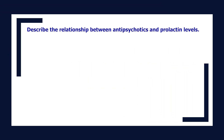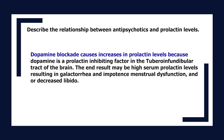Describe the relationship between antipsychotics and prolactin levels. Dopamine blockade causes increases in prolactin levels because dopamine is a prolactin-inhibiting factor in the tuberoinfundibular tract of the brain. The end result may be high serum prolactin levels, resulting in galactorrhea, impotence, menstrual dysfunction, and/or decreased libido.